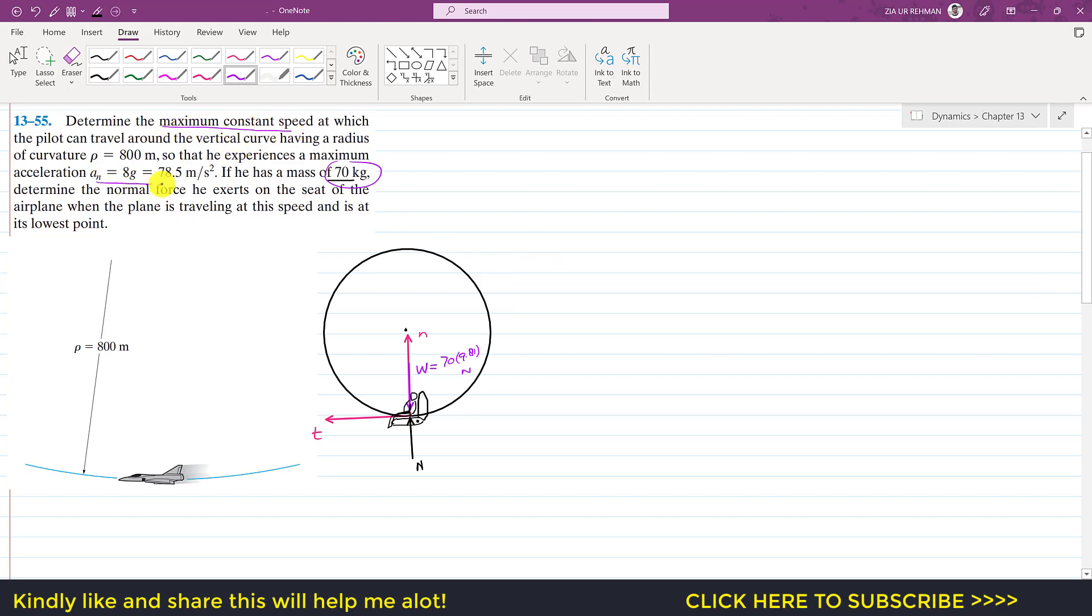So we are given a_n. We know that a_n equals to v squared divided by ρ, and it is given that this a_n is equal to 78.5 meter per second squared. So to find that